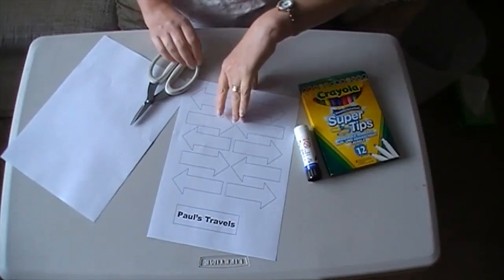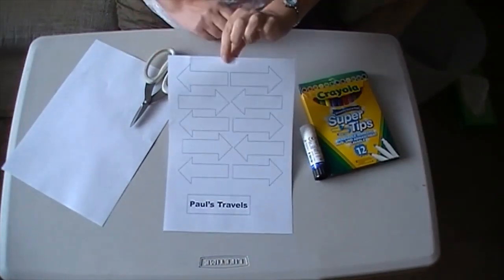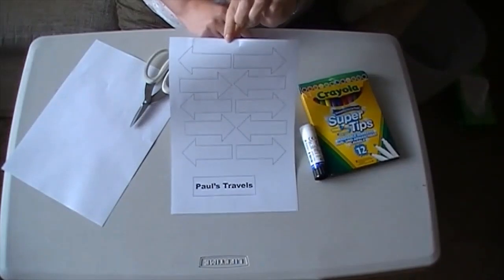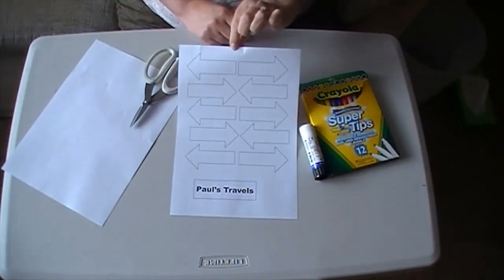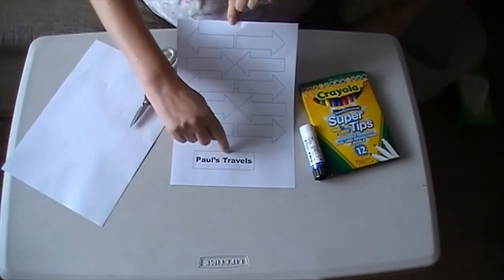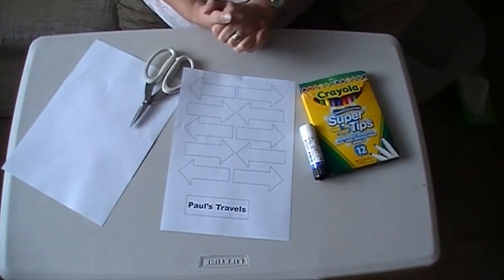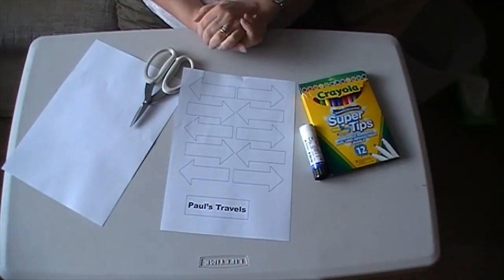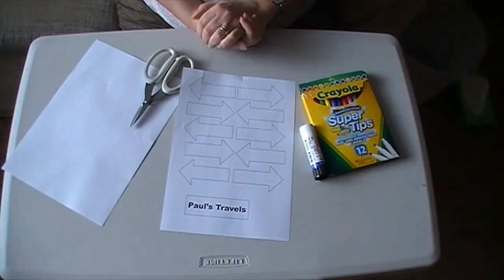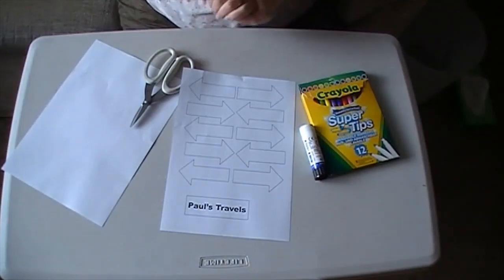So first thing you need to do is if you can, you want to print out the sheet with 10 arrows and the bit that says Paul's travels. If you can't print it out that's fine, you can draw 10 of your own arrows and write Paul's travels yourself and then cut them out or you can draw them onto the signpost, whichever you prefer to do.